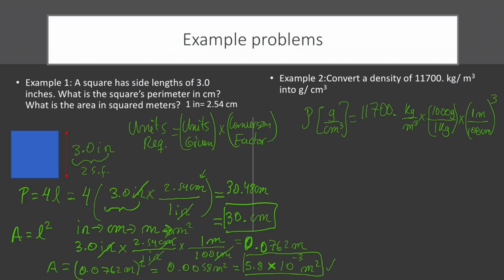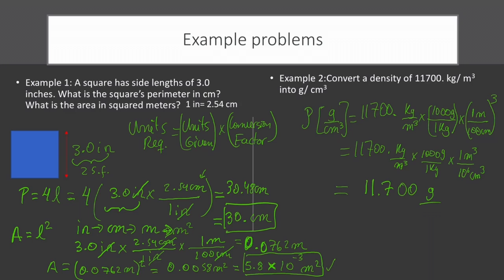Having done that, we rewrite everything. We have 1 meter cubed divided by 10 to the sixth centimeter cubed, because the cube affects both the units and the numbers. Multiplying and dividing everything accordingly, we get 11.700 g per centimeter cubed. Kilograms cancel with kilograms, meter cubed cancels with meter cubed, and we're left with grams per centimeter cubed. We need 5 significant figures because the original number had 5 significant figures.